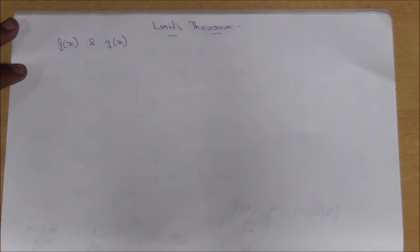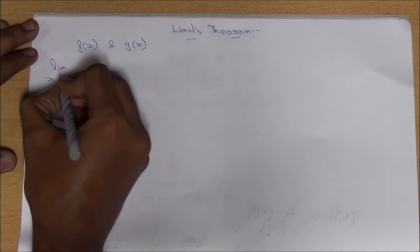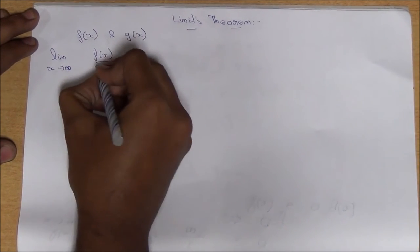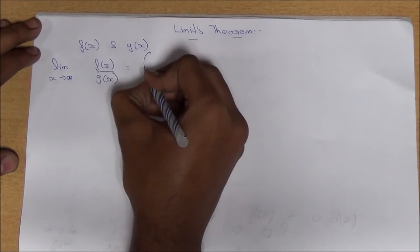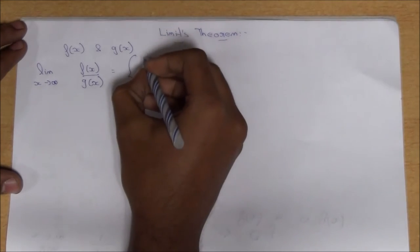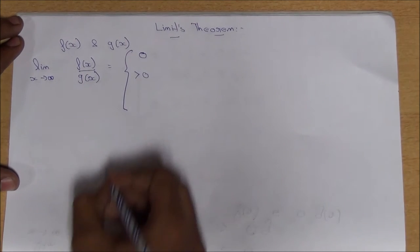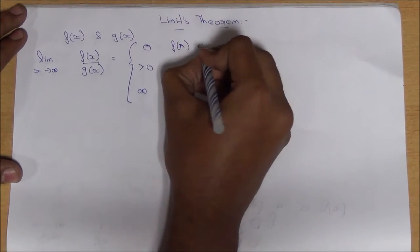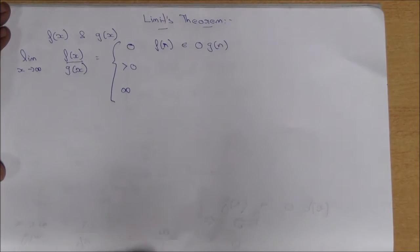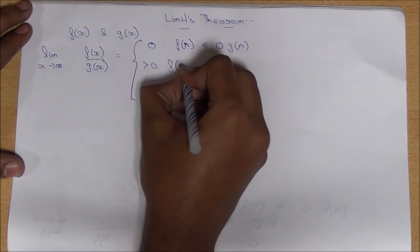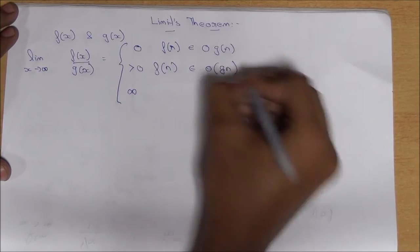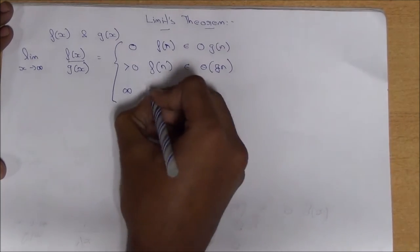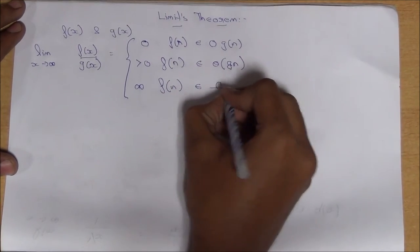In order to solve a Limits Theorem, we would be given two equations, say f and g. We need to apply the limit x tends to infinity to the equation f divided by g. While doing this, we might get three possible outcomes: 0, greater than 0, or infinity. When the answer is 0, f belongs to big O. When the answer is greater than 0, f belongs to big theta. When the answer is infinity, f belongs to big omega.